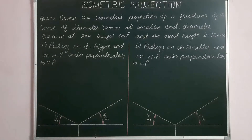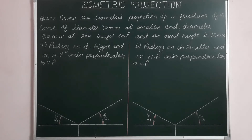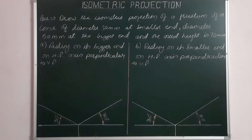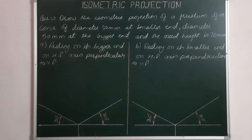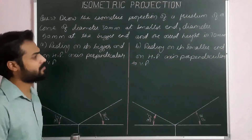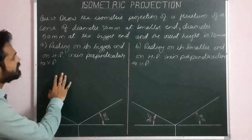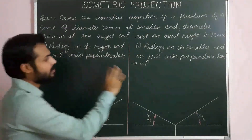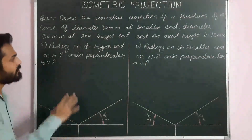Let's take a problem: isometric projection of a frustum of a cone of diameter 30 mm at the smaller end, 50 mm at the larger end, and actual height 70 mm. First, resting on its bigger end on HP with axis perpendicular to VP. Second, resting on its smaller end on HP with axis perpendicular to VP. We will use two methods: progressive construction method and extraction method.